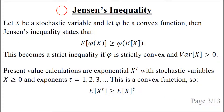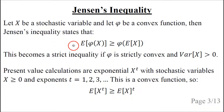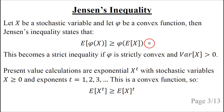So what is Jensen's Inequality? If we let x be a stochastic variable and let phi be a convex function — and we will demonstrate on the next slide what that means — then Jensen's Inequality states that if we apply the function phi to the variable x and then take the mean, the result is greater than or equal to first taking the mean of the stochastic variable x and then applying the function phi. This becomes a strict inequality if the function phi is strictly convex and the variance of x is greater than zero.